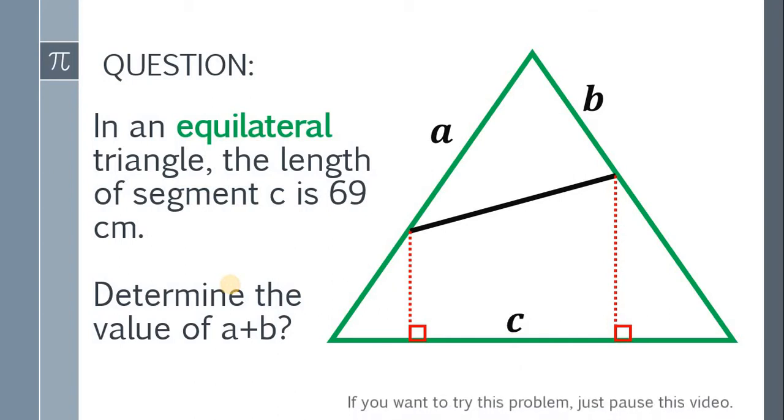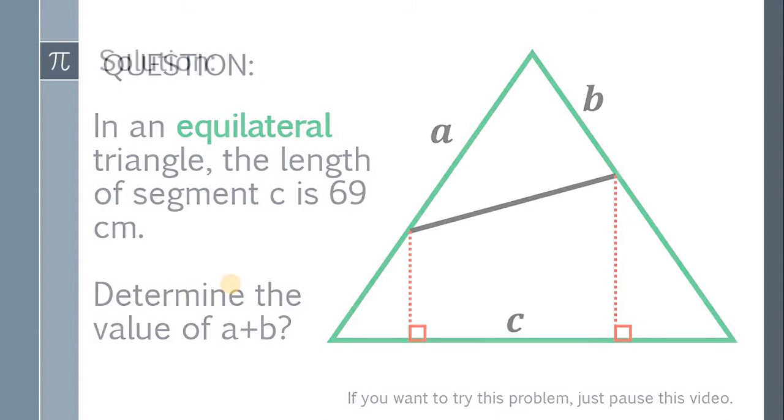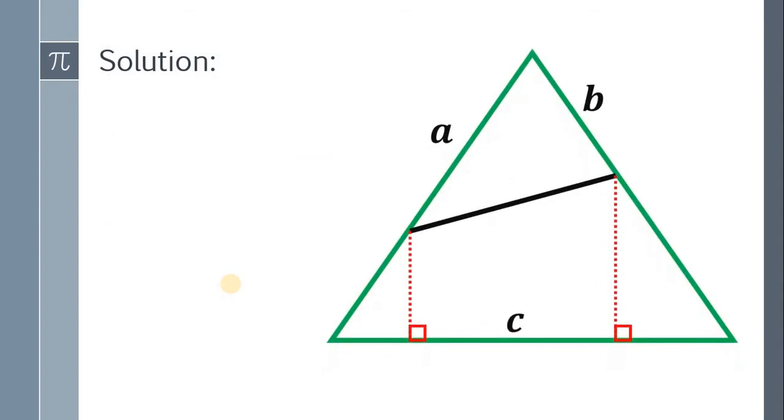Now, if you want to try this problem, just pause this video. And if you're ready, here's the solution. Recall that C equals 69 cm. It follows that A plus B is equal to 2 times 69 or simply 138 cm. And we're done.